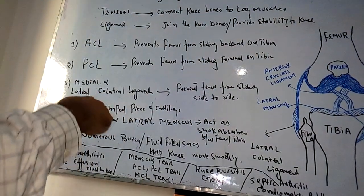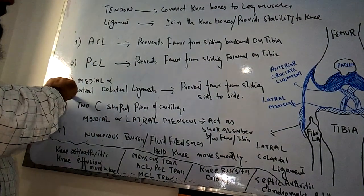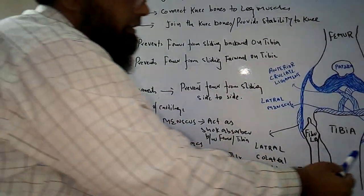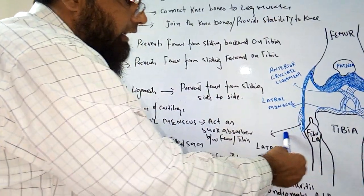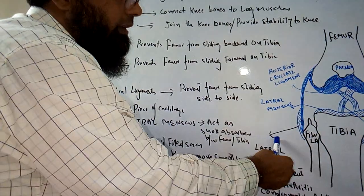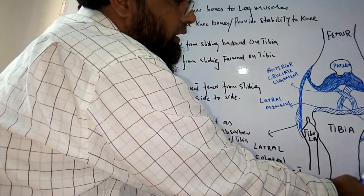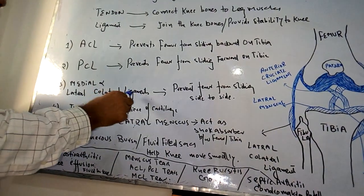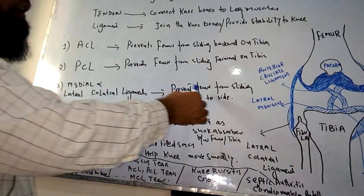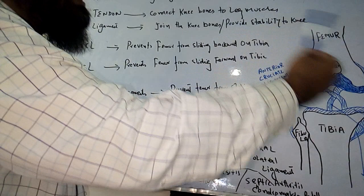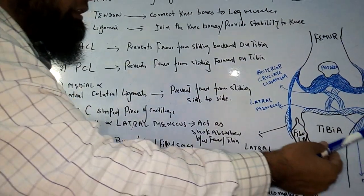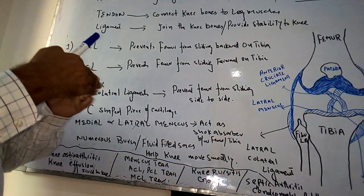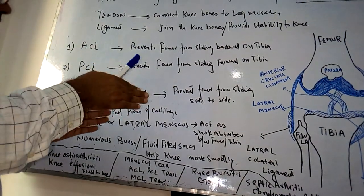At number three, we discuss the medial and lateral collateral ligaments. The medial and lateral collateral ligaments prevent the femur from sliding side to side — that is, they prevent the femur from moving from one side to another side.